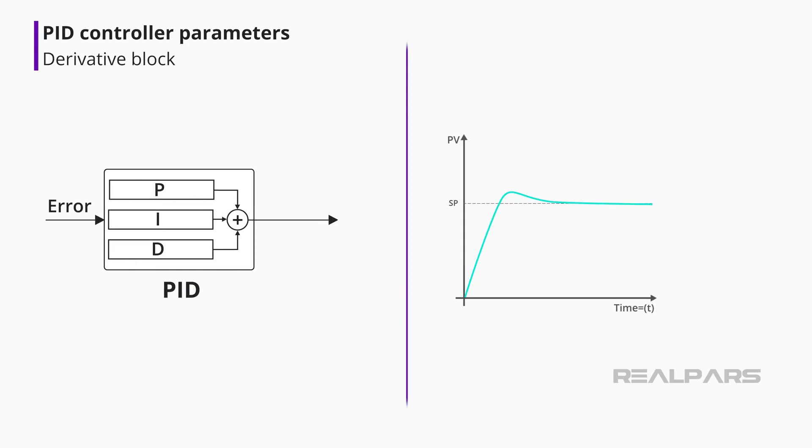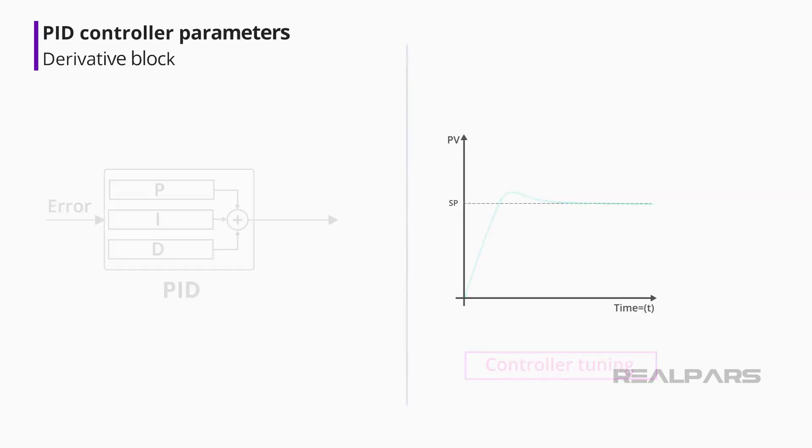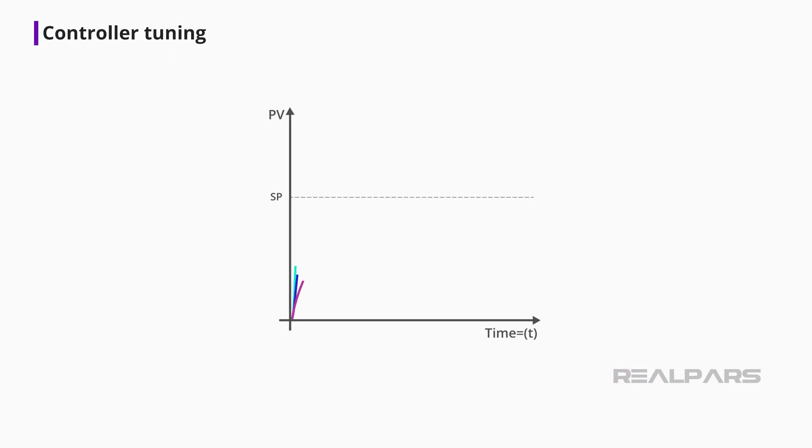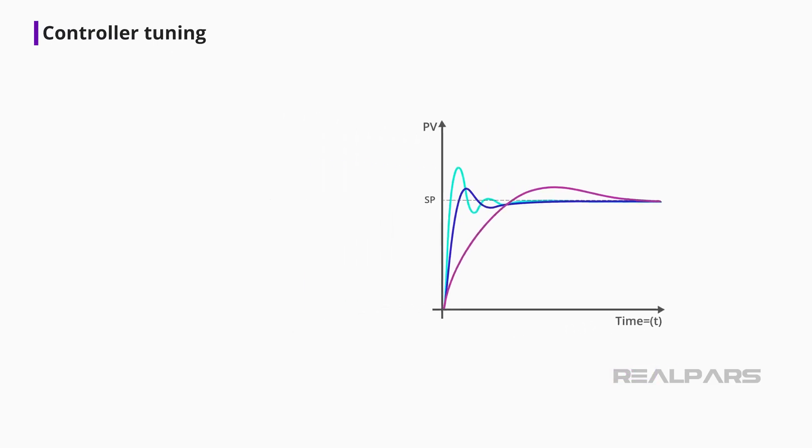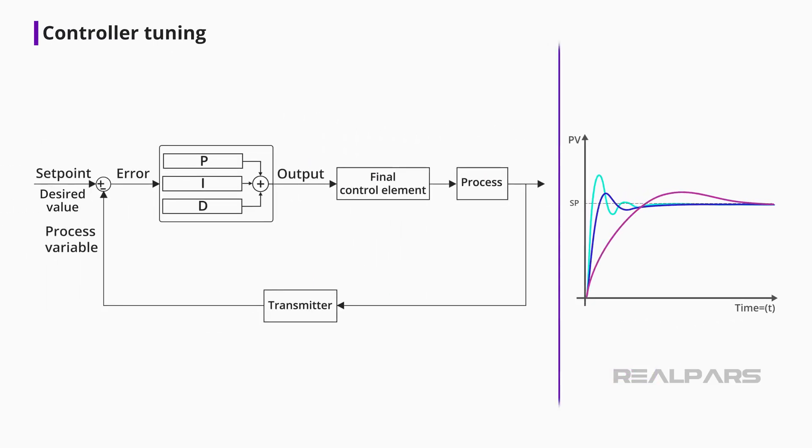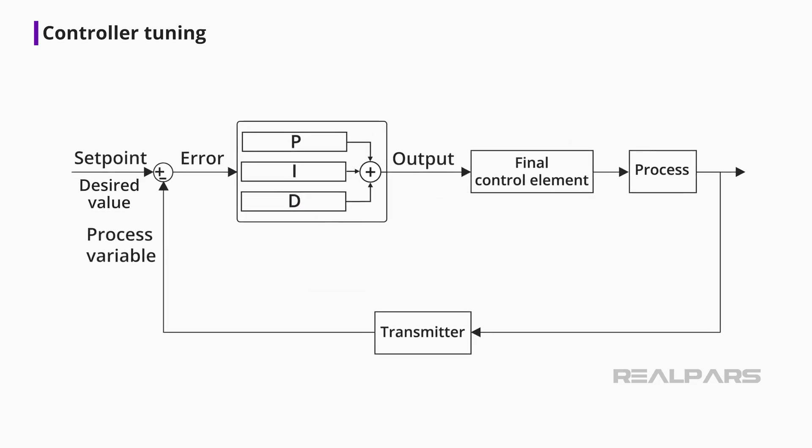That brings us to a term called Controller Tuning. We said earlier that every process responds differently and that the PID controller determines how much and how quickly correction is applied by adjusting proportional, integral, and derivative action. Controller Tuning involves correctly setting the controller P, I, and D values for specific process requirements. Interestingly, the correct settings achieved by Controller Tuning can differ vastly between processes because of specific requirements.